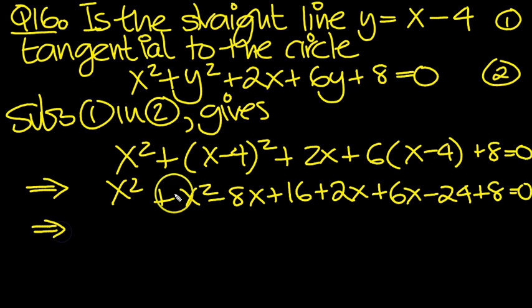So that tells us we get 2x squared. How many x's do we get? Minus 8 plus 8 is no x's. And then the number is 16 plus 8 minus 24. 16 plus 8 is 24, take 24 is 0. All that equals 0. That tells us that x squared equals 0.